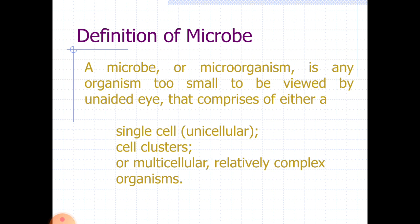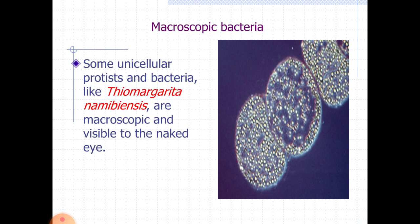The definition of microbes is: any organism too small to be viewed by the unaided eye, comprising either single-cellular or unicellular structures, cell clusters, or multicellular relatively complex organisms. So in microorganisms we can see both unicellular and multicellular forms. However, some unicellular protists and bacteria like Thiomargarita namibiensis and Epulopiscium are macroscopic and visible to the naked eye.